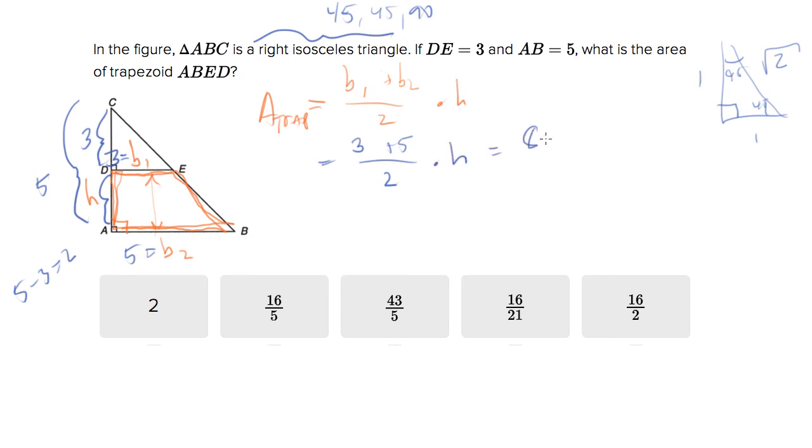There you can get, so 8 over 2 times 2 equals 8. 8 is not among the answer choices, but you'll notice that we do have 16 over 2, which is equal to 8. And this should really be changed to say 8.